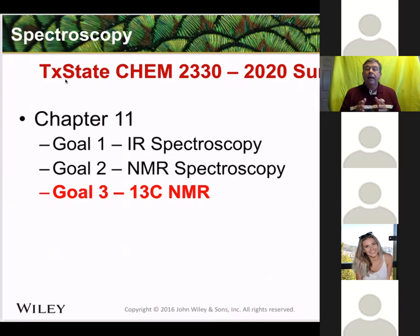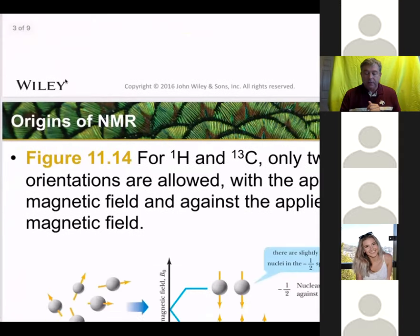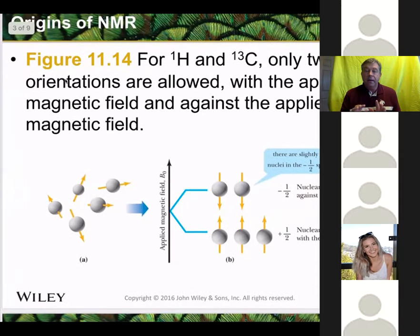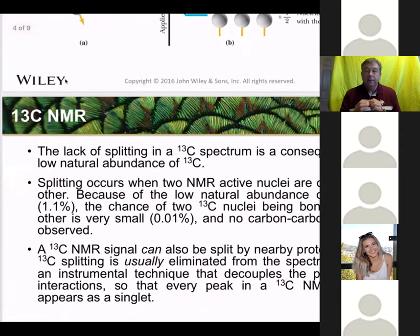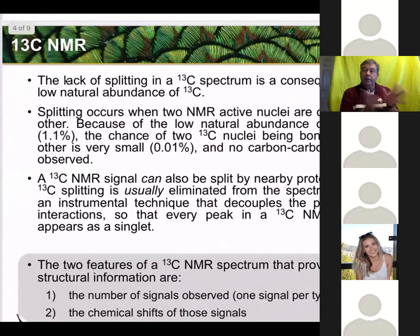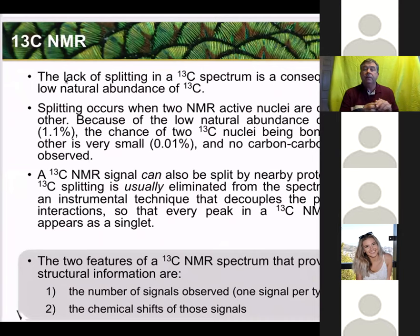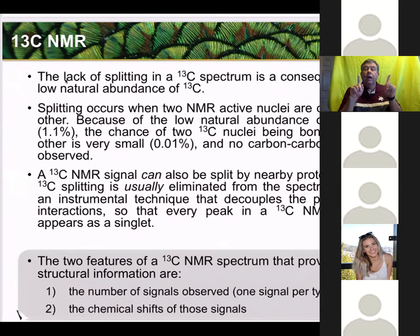The problem is that the natural abundance of carbon-13 is much lower — only 1.1% of all carbon is carbon-13. Therefore, we don't have as many of those carbons available to do the spectroscopy. Because of that, we will not see splitting, since the split goes away — you rarely have two carbon-13s next to each other. Only those two carbon-13s that are spin-active can spin-split each other, so we do not see splitting.